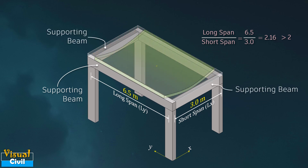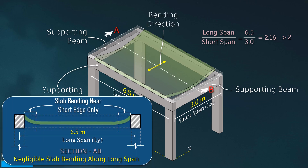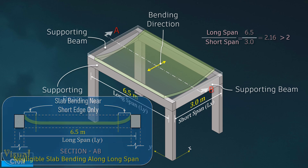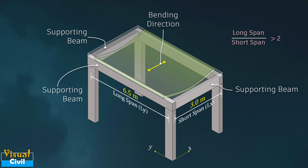Therefore, the bending along the long span becomes negligible in comparison with that along the short span, and the resulting slab action is effectively one-way. We can say that when a rectangular slab is supported on all four sides and the ratio of longer span to shorter span is more than 2, then the slab is called a one-way slab.